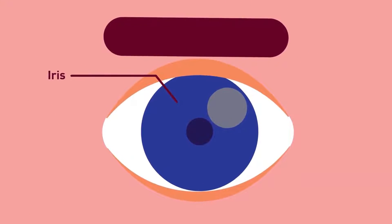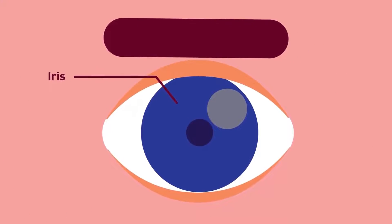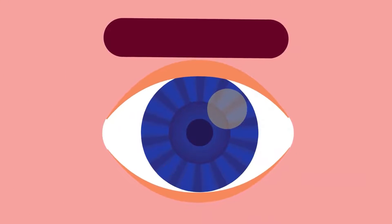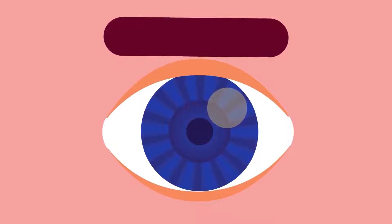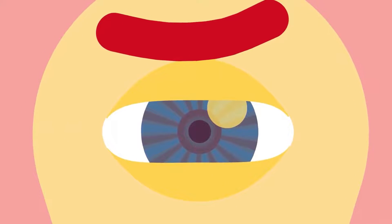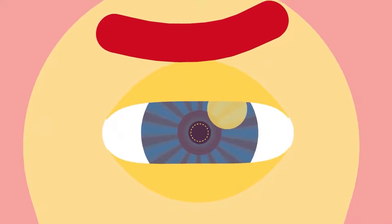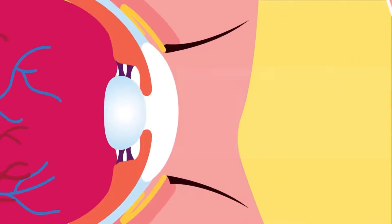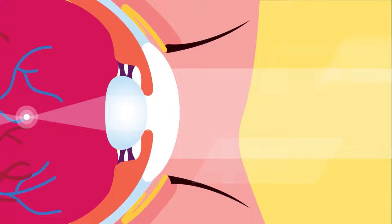The iris is pigmented with colour and has radial and circular muscles that regulate the amount of light entering the eye. The round hole at the centre of the iris, through which light enters, is called the pupil.